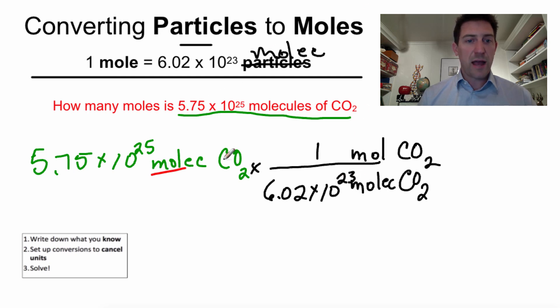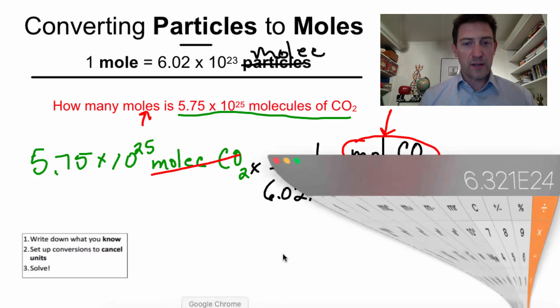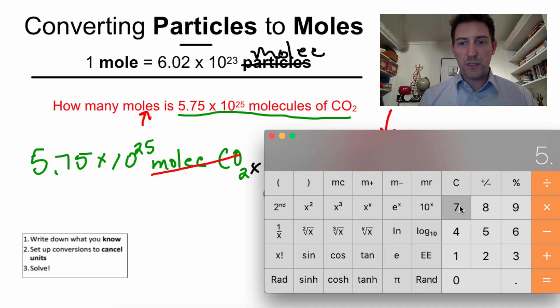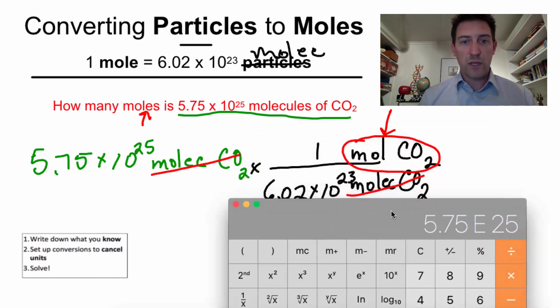And right here it says 1 mole is equal to 6.02 times 10 to the 23rd molecules. I'm going to cancel some things just to keep track. I always like to do this, because I've found it's really hard to get it wrong if you do that. The only thing I have left is moles of CO2. And that's what I want my answer in, is moles of CO2. So, I get out the trusty calculator. I'll clear it out from the last problem. And what we're typing in here is 5.75. 5.75 times 10 to the 25. Remember, we put EE 25. 5.75 times 10 to the 25.